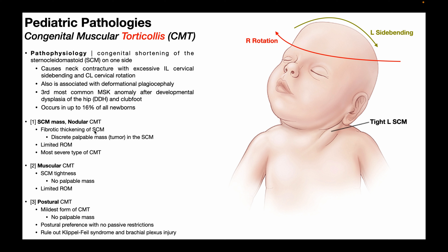There are three major types of congenital muscular torticollis. The first is where there's an SCM mass, also called nodular CMT, where there's a fibrotic thickening of the sternocleidomastoid muscle and a discrete palpable mass within the SCM muscle belly. In some contexts this palpable mass is termed a tumor — this is older terminology and has nothing to do with cancer. You should use the term palpable mass in the clinical setting.